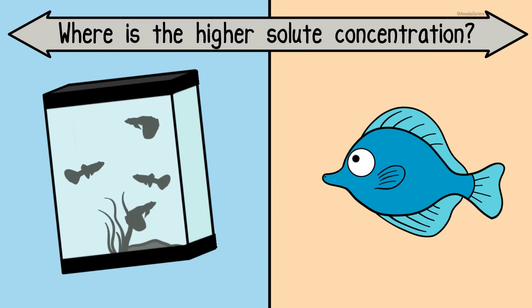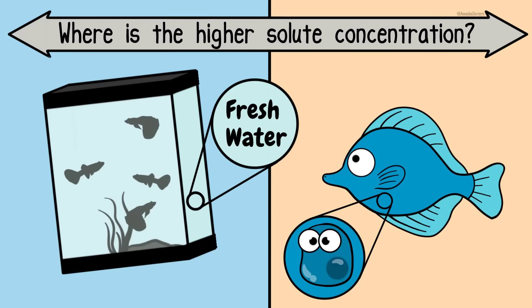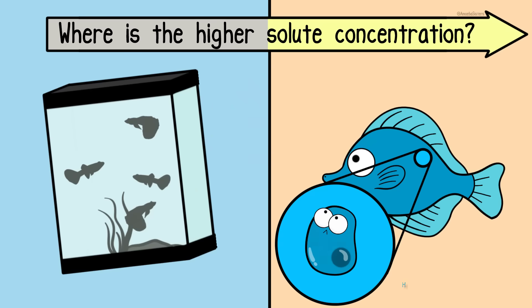First ask, where is the higher solute concentration? In the saltwater fish cells? Or in the freshwater that the fish would be hypothetically placed in? Definitely in the saltwater fish cells. So where would the water go? It goes to the area where there is a higher solute concentration. The hypertonic side. So it goes into the cells of that poor saltwater fish.